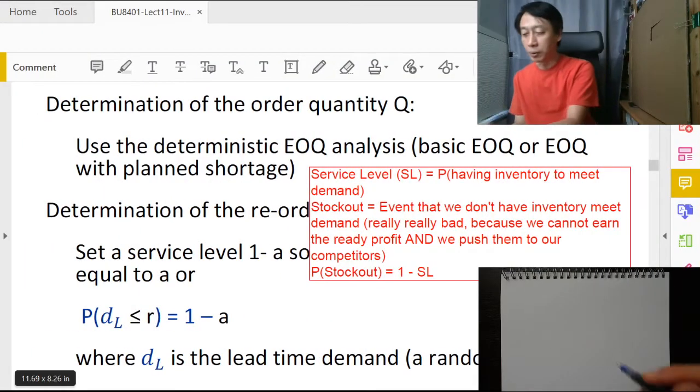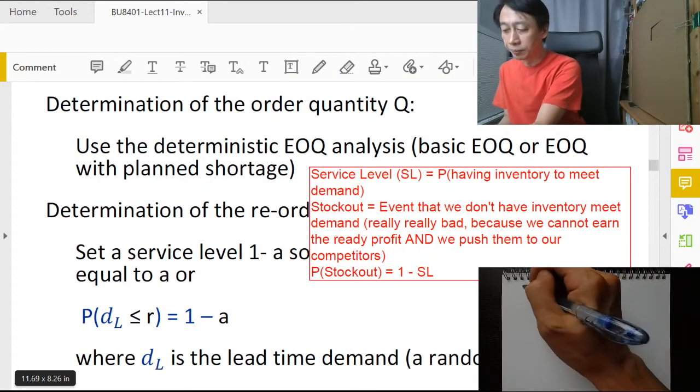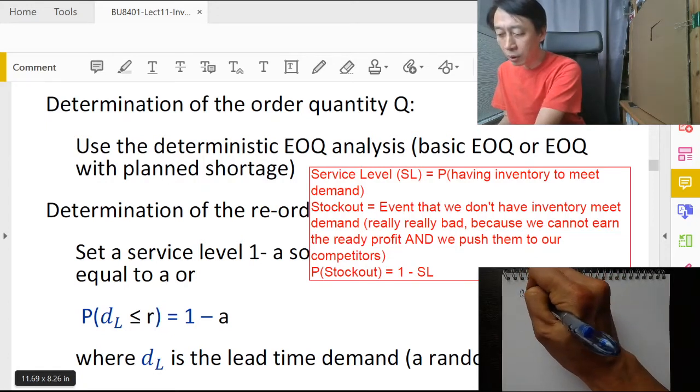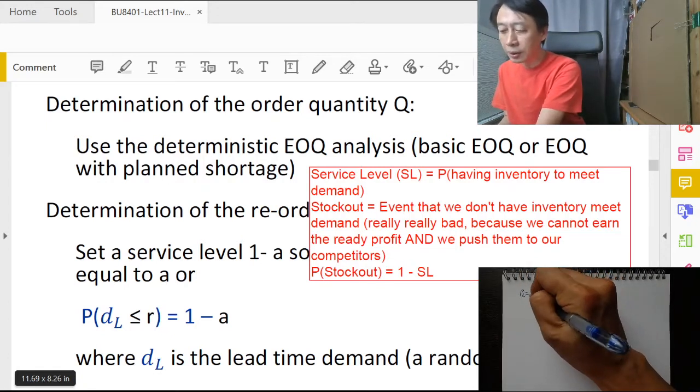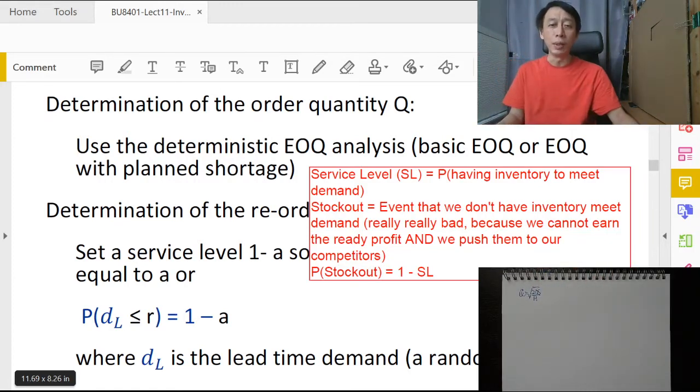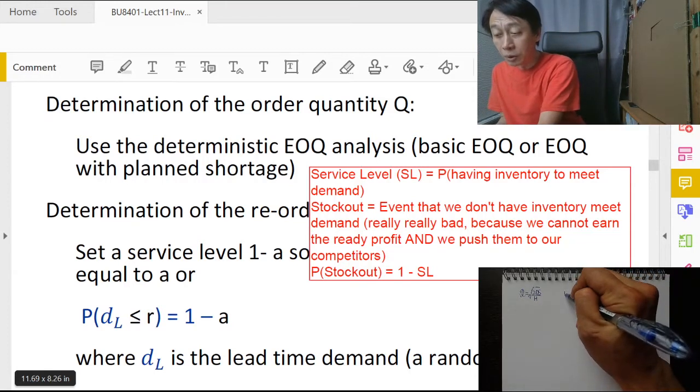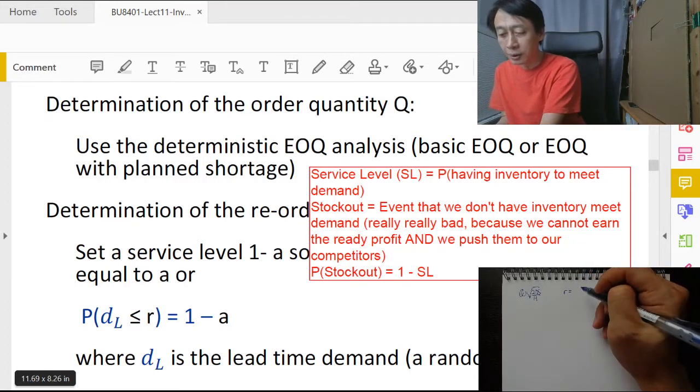For quantity to order, we were saying that the quantity to order is best fixed at square root of 2DS over H, following the EOQ formula. And the reorder point, when to order, is best fixed at the inverse CDF of the demand during lead time.